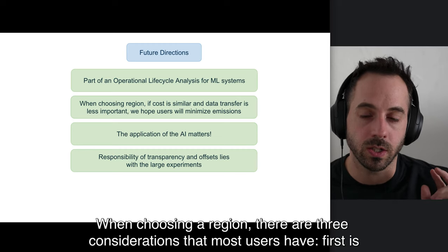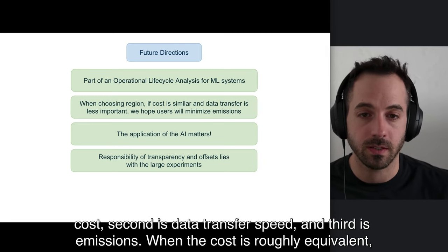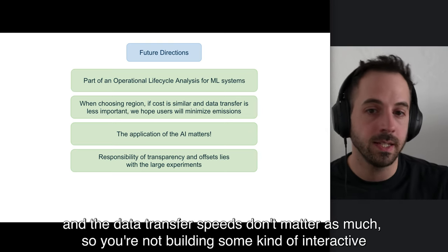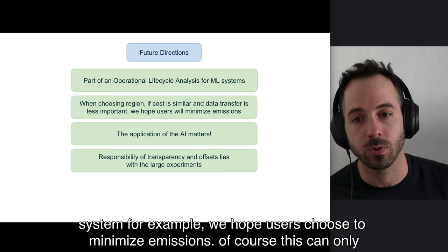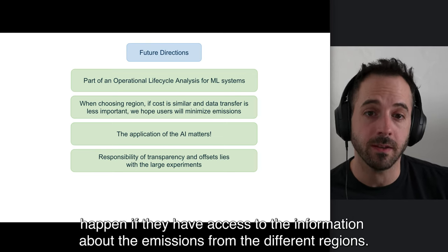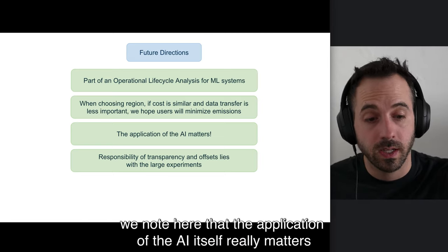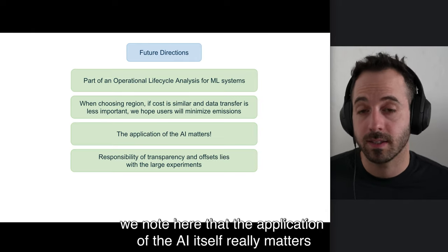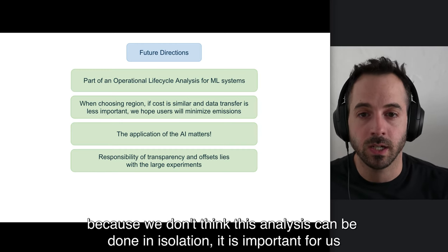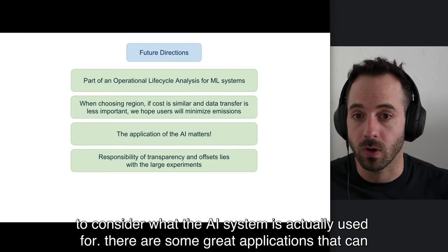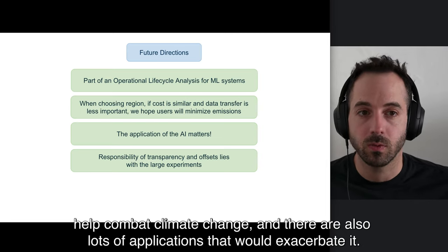When choosing a region, there are three considerations that most users have. First is cost, second is data transfer speed, and third is emissions. When the cost is roughly equivalent and the data transfer speeds don't matter as much, we hope users choose to minimize emissions. Of course, this can only happen if they have access to the information about the emissions from the different regions. We note here that the application of the AI itself really matters. Because we don't think this analysis can be done in isolation, it is important for us to consider what the AI system is actually used for. There are some great applications that can help combat climate change, and there are also lots of applications that would exacerbate it.